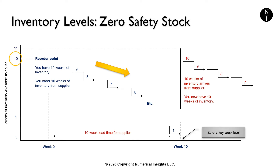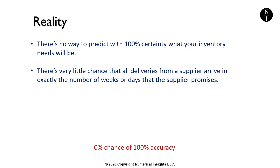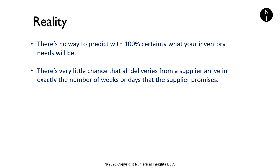The zero safety stock model is a very risky way to plan inventory, since variations in demand and supplier delivery times happen every day, making our calculations merely estimates. All it takes is one delay in a delivery or one retailer running a promotion of your product to run out of inventory before the next shipment arrives. There's no way to predict with 100% certainty what your inventory needs will be, and very little chance that all deliveries arrive in exactly the time the supplier promises.